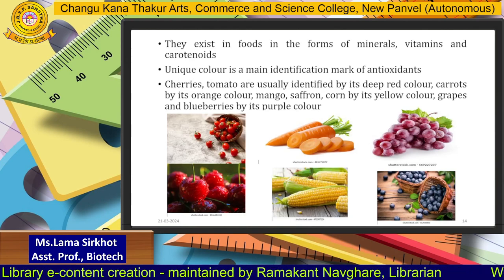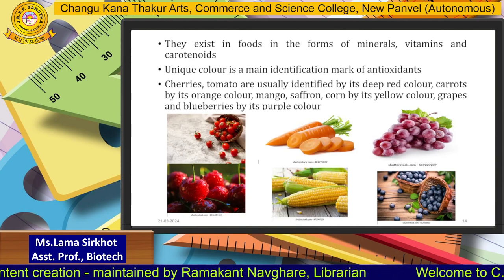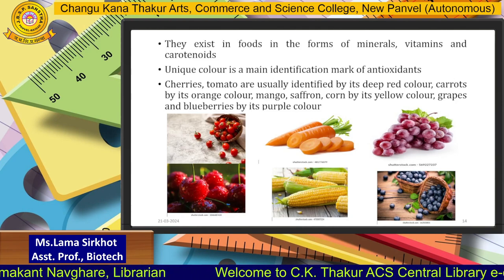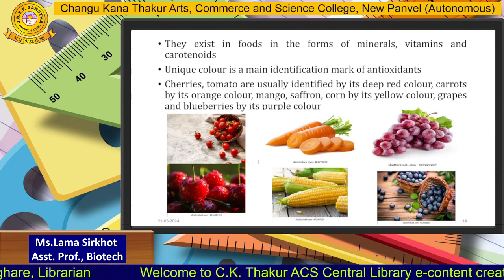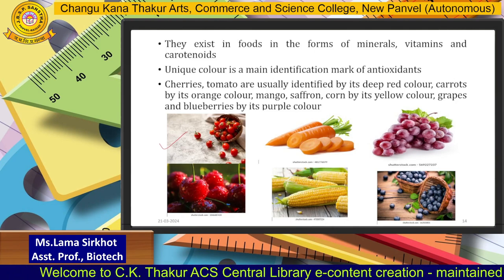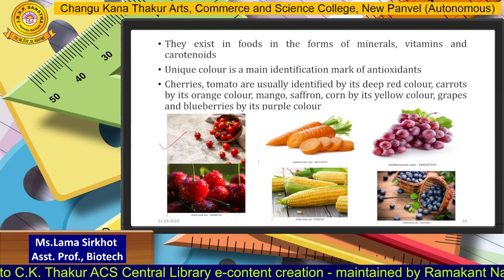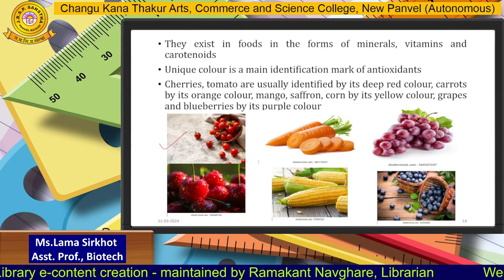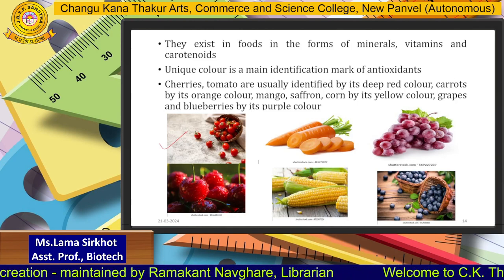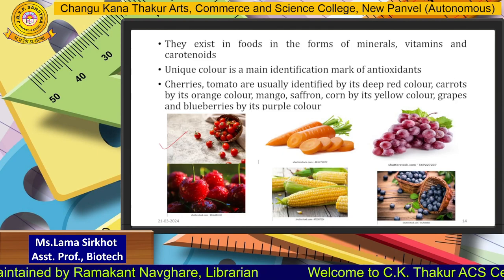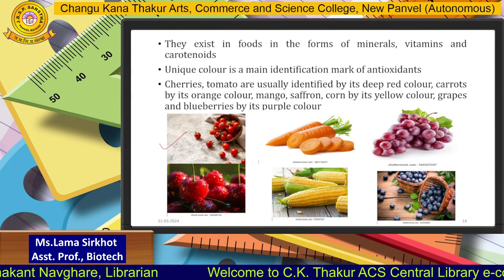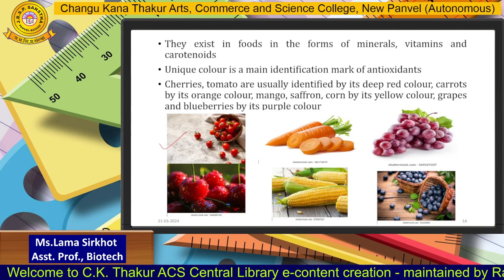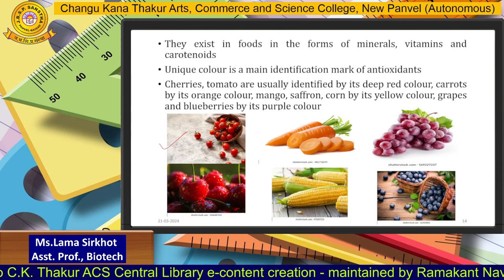Antioxidants are found in food in the form of minerals, vitamins, and carotenoids. A unique color is the main identification mark of antioxidants. For example, tomatoes are bright red, carrots are bright orange, grapes and cherries are deep red, blueberries are dark blue or purple, and corn is yellow. Cherries and tomatoes are identified by deep red color, carrots by deep orange, mango, saffron, and corn by yellow, and grapes and blueberries by their purple color. These colors indicate the presence of antioxidants in these food items.